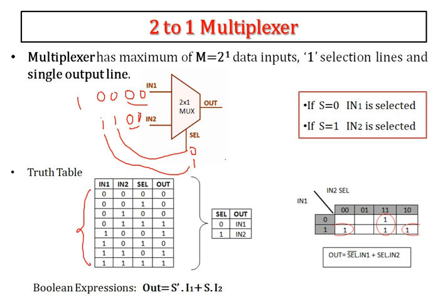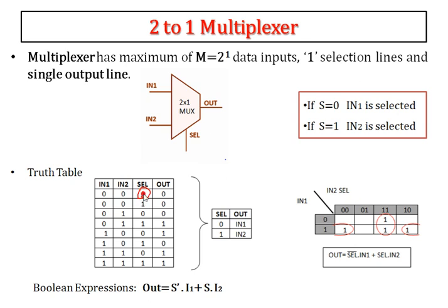Observe carefully: if both inputs are 0,0 and selection line is 0, then input 1 is selected and it is my output. If selection line is 0 and input 1 is 1, my output is 1. If selection line is 1, it selects input 2 — and if input 2 is 0, then output is 0. Fill all these data accordingly; this is the full truth table used to derive the Boolean expression.